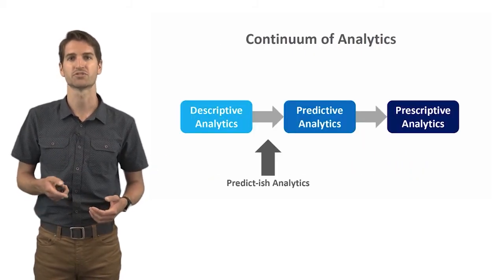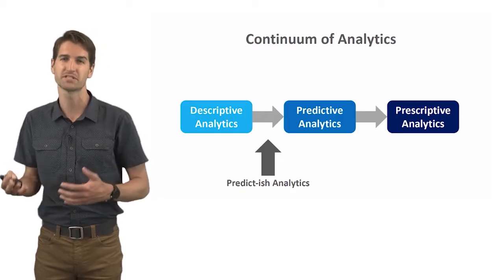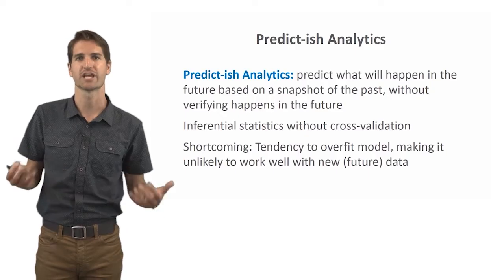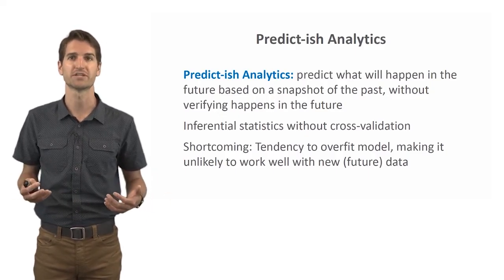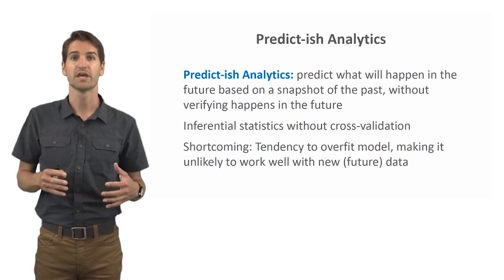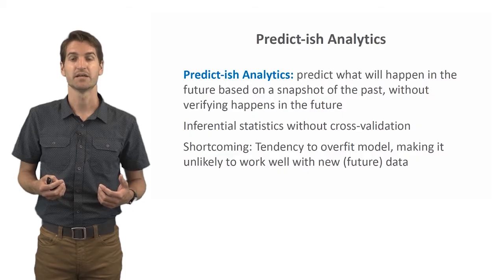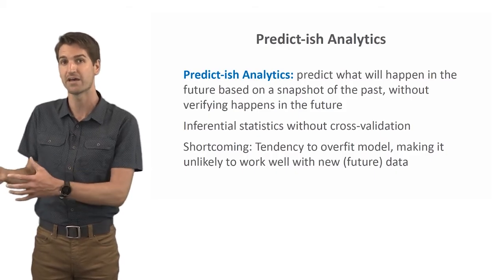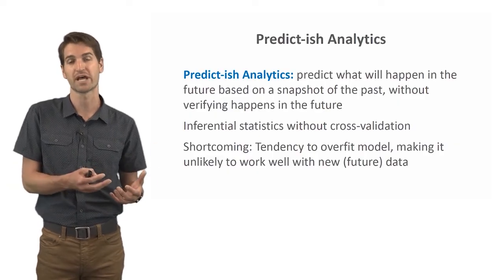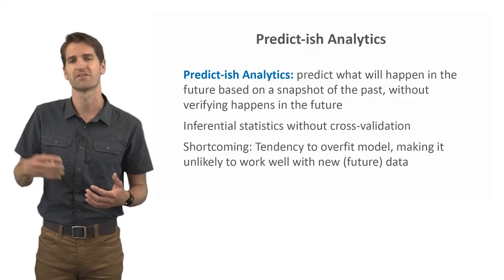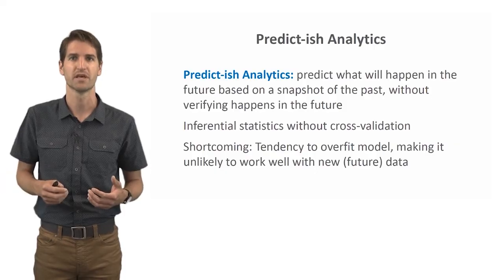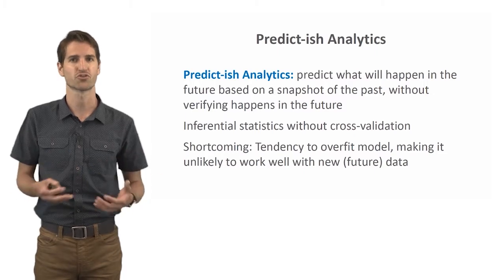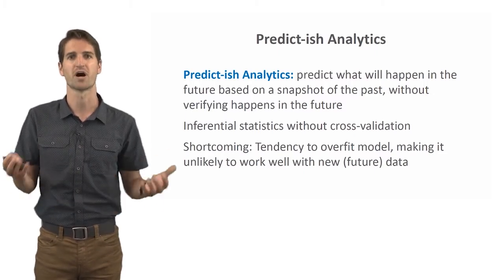Moving along the continuum, there's something I like to call "predict-ish" analytics. It's not quite predictive analytics yet, but it's definitely more advanced than descriptive analytics. Predict-ish analytics are used to predict what will happen in the future based on a snapshot of the past, and then we go further in terms of trying to make inferences based on the data. We're not verifying what happens in the actual future, but we are making inferences about what happened in the past to try to make those predictions. We're talking about many applications of inferential statistics where we're drawing inferences based on a sample of employees from a larger population.